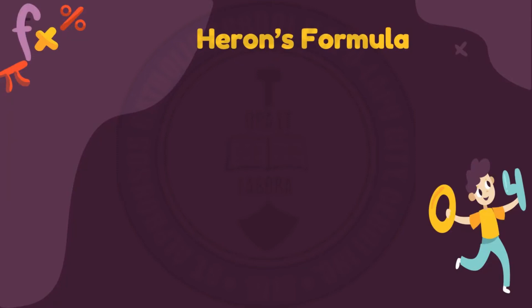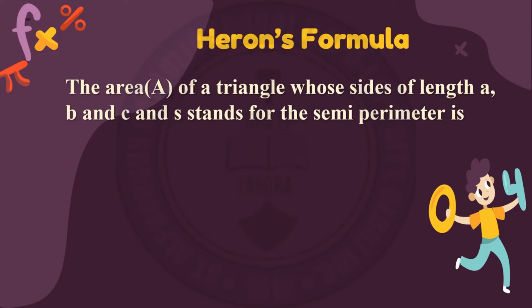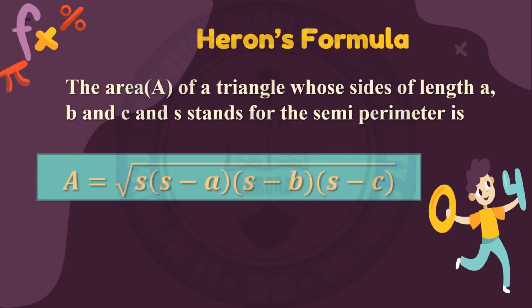Aside from solving the three sides and three angles of any oblique triangle, we can also determine the area of a triangle whose sides are of length a, b, and c, where s stands for the semiperimeter. Using Heron's Formula: Area = √(s(s−a)(s−b)(s−c)), where the semiperimeter s = (1/2)(a + b + c).